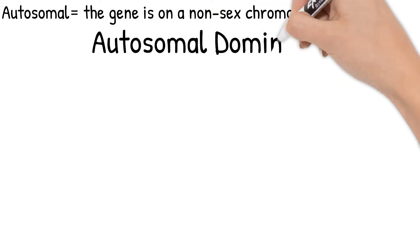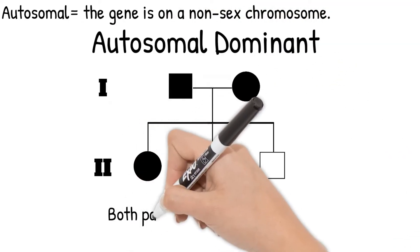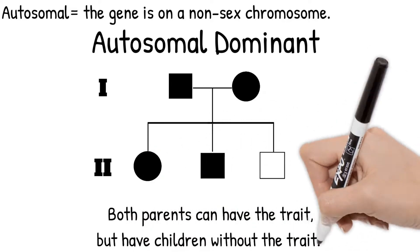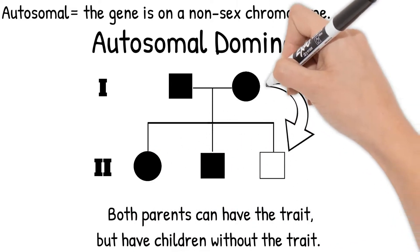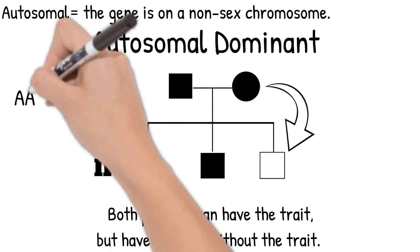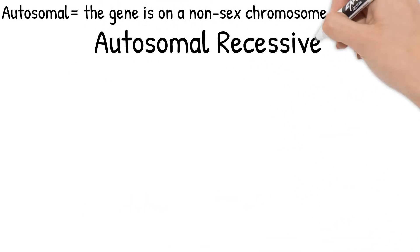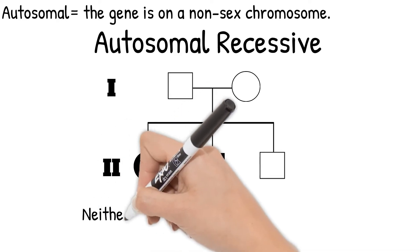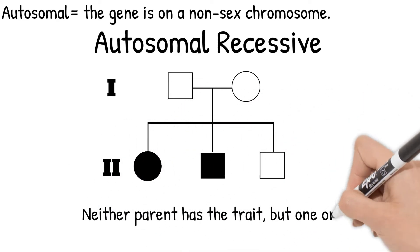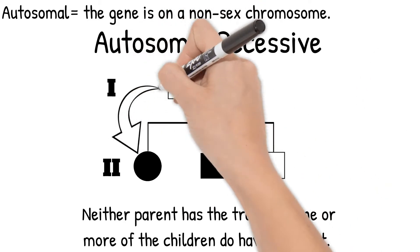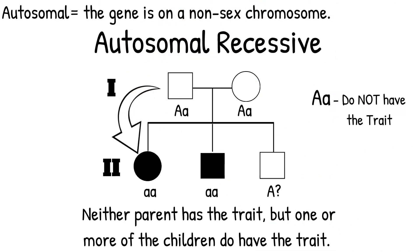In autosomal dominant pedigrees, both parents can have the trait, but they can have children without the trait. This works because homozygous dominant as well as heterozygous genotypes are affected. For autosomal recessive pedigree charts, look for if neither parent has the trait but some of the children do, as heterozygous genotypes are not affected in these charts.